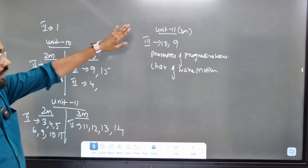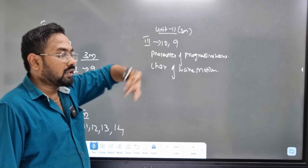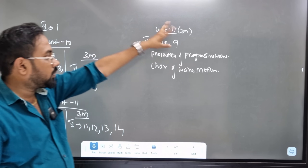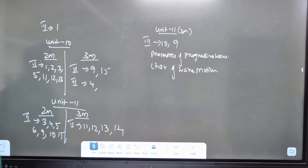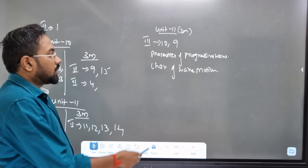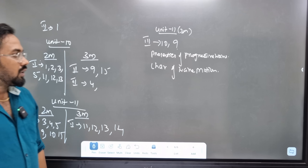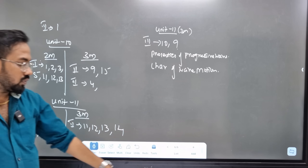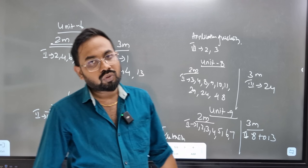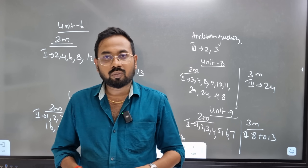Unit 11 has a 3-mark topic. In the third unit, it is lessons 10-9. The law of strings, lessons 9 and 10, are important. Study the properties of progressive waves and the characteristics of wave motion. Study the law of strings and structured string topics. This is all the 11th standard material. Subscribe to the channel for the next unit.